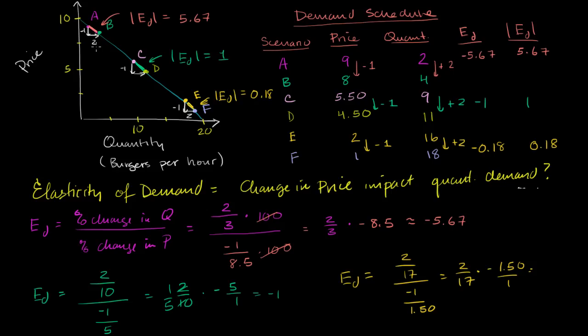Despite the fact that for each dollar drop in price we had the same increase in quantity demanded, we had a very different elasticity of demand. That probably has something to do with the fact that elasticity of demand is based on percentage change in quantity relative to percentage change in price, instead of just change in quantity over change in price. If it was just the latter, it would be constant — but we saw very different results.